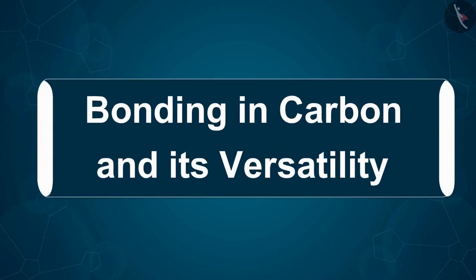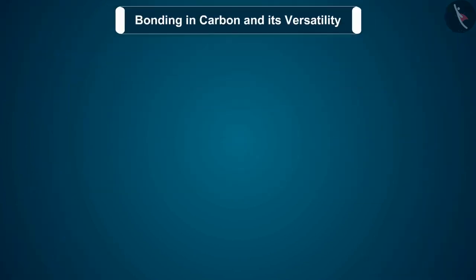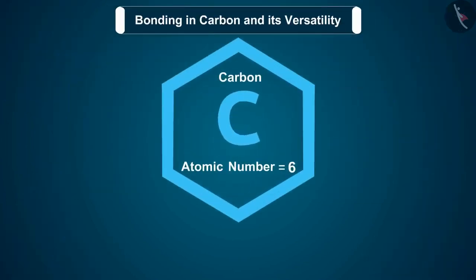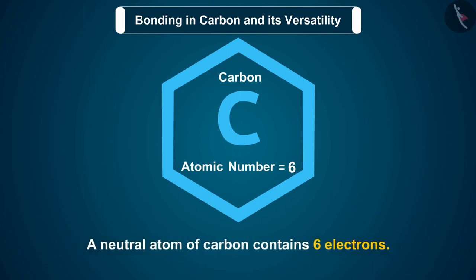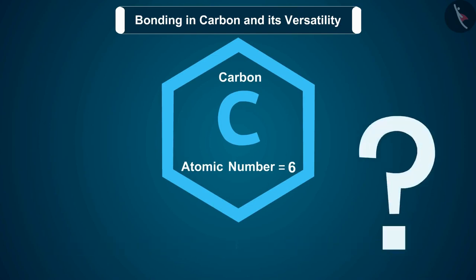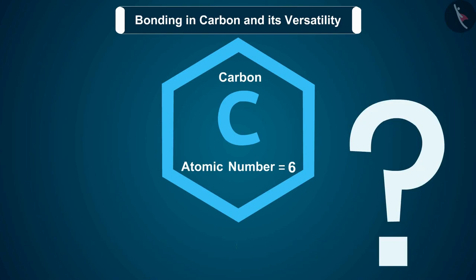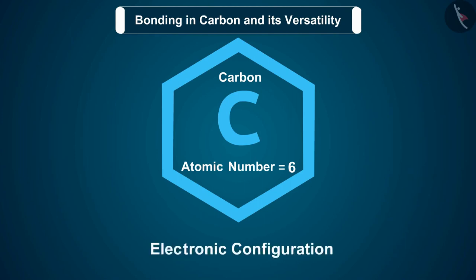Before we move ahead with our discussion, we should know that the atomic number of carbon is 6, which means that a neutral atom of carbon contains 6 electrons. We are studying its electronic configuration so that we can understand the type of bonding in carbon.